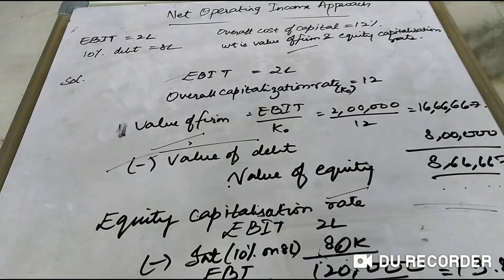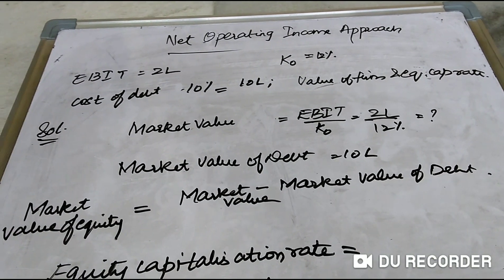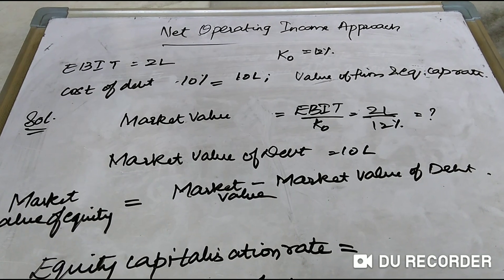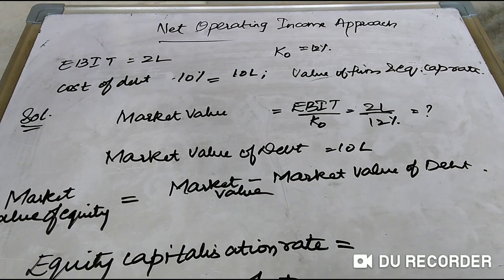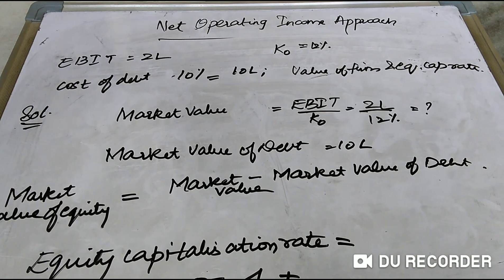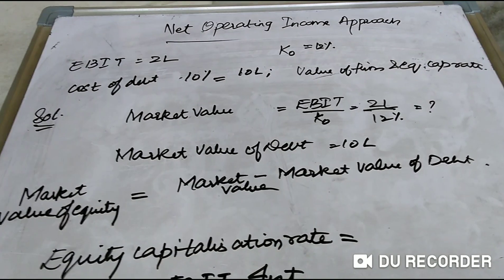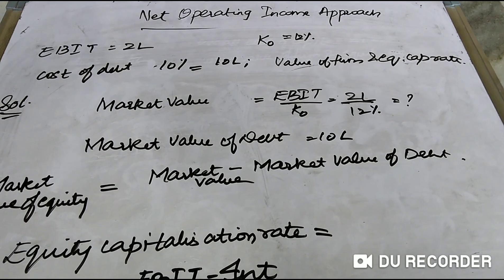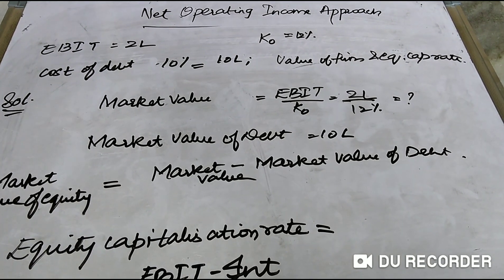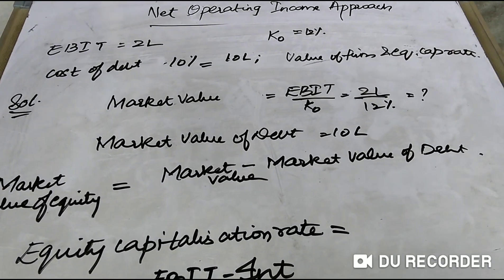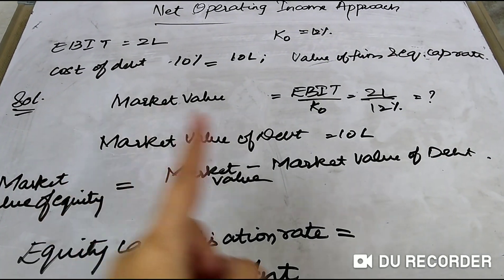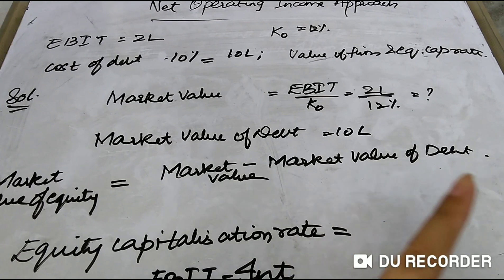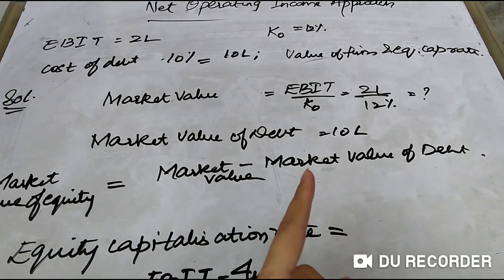Now here is a homework problem. EBIT is 2 lakh rupees, cost of debt is 10 lakh rupees at 10% interest per year, and K0 (overall cost of capital — equity plus debt) is 12%. We have to find the value of the firm and equity capitalization rate. First, calculate market value: EBIT ÷ K0 = 2,00,000 ÷ 12%. EBIT is 2 lakhs and K0 is 12%.